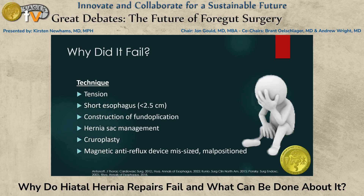From the technical perspective, failure can be driven by the nature of the cruroplasty, a shortened esophagus, construction of your fundoplication, leaving the hernia sac, stripping of the hiatal peritoneum, and anti-reflux device failure. Looking at each of these components individually: was this a large hernia with a large hiatal defect and the closure was on tension? Is there dysphagia or obstructive symptoms, and was the hiatal closure too tight?